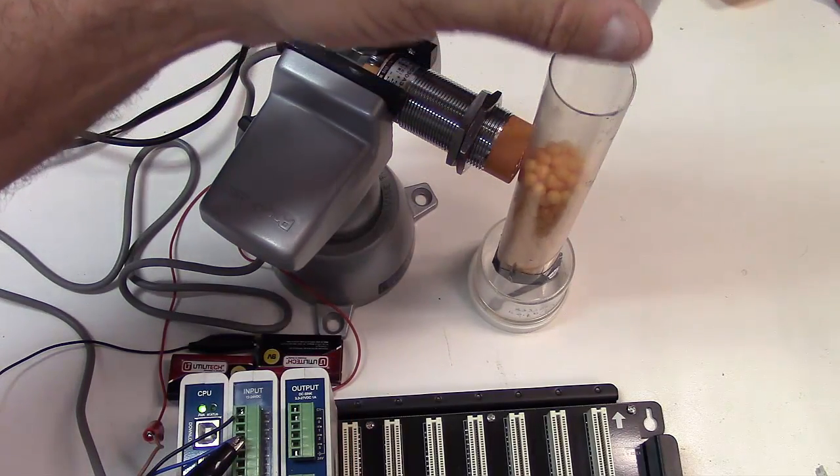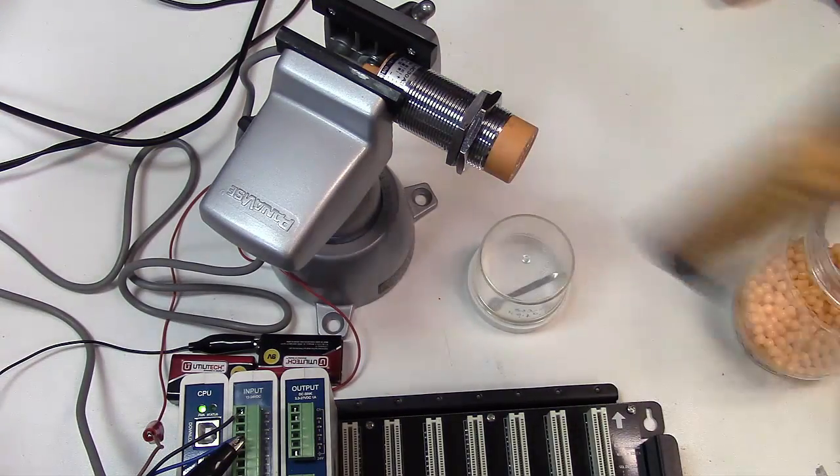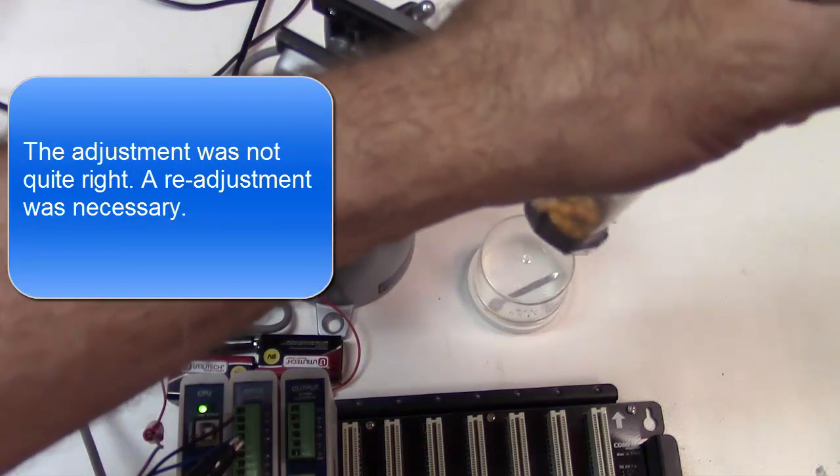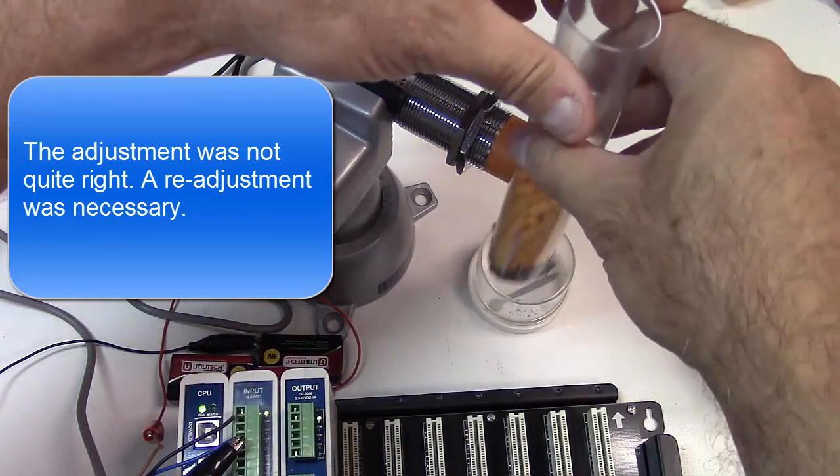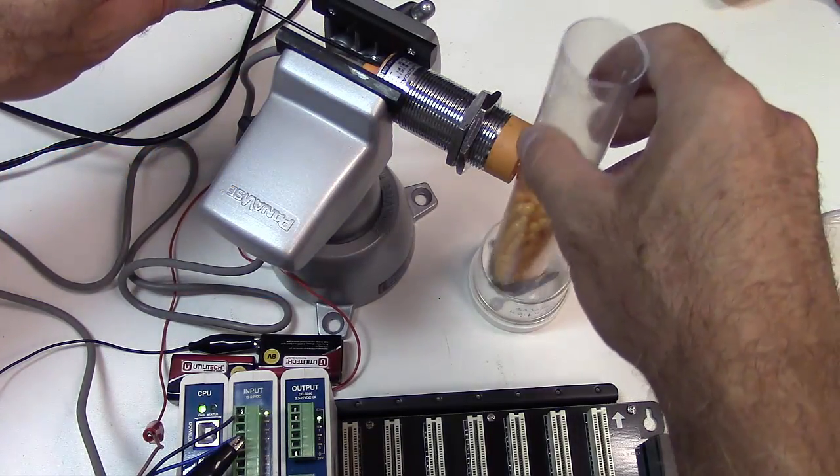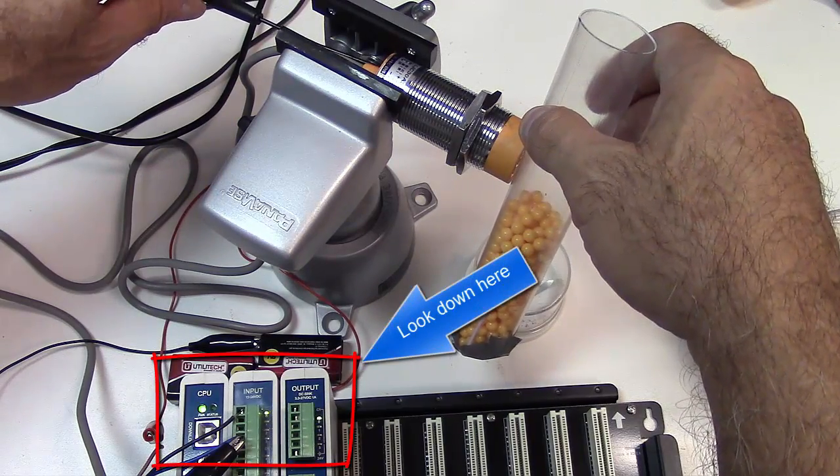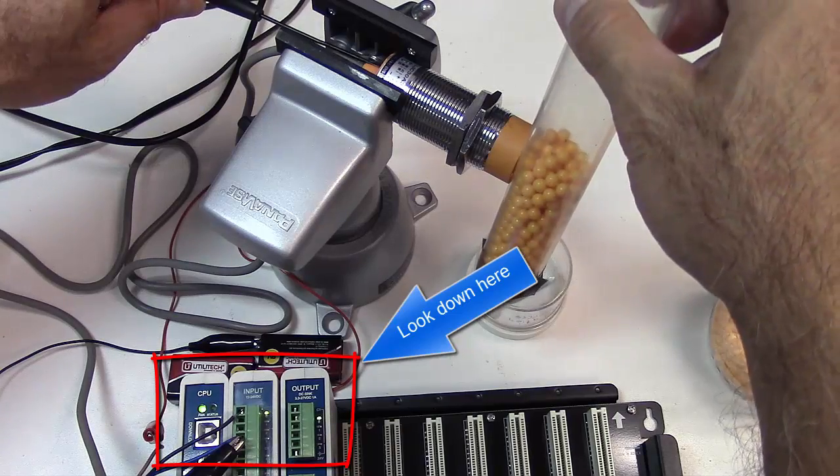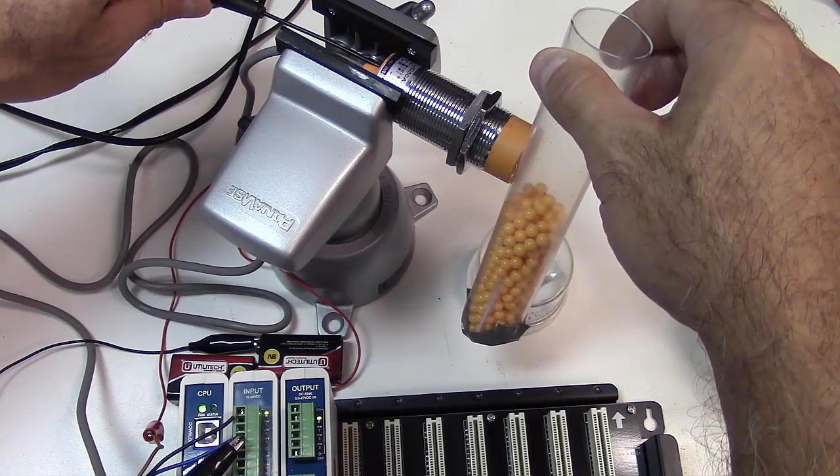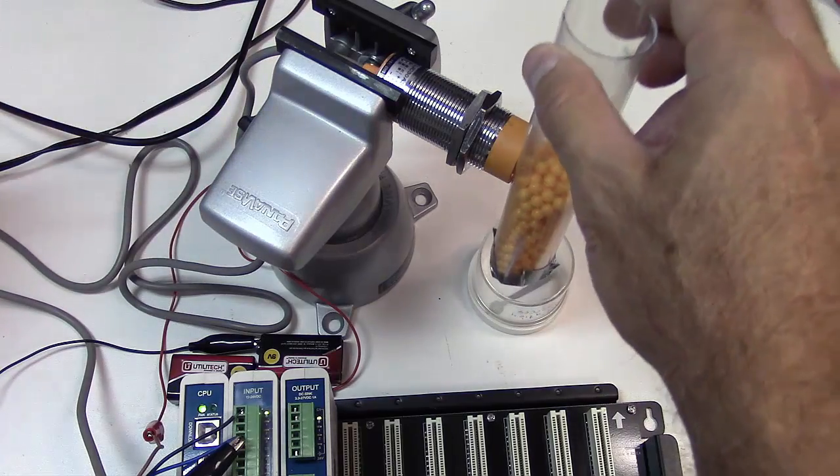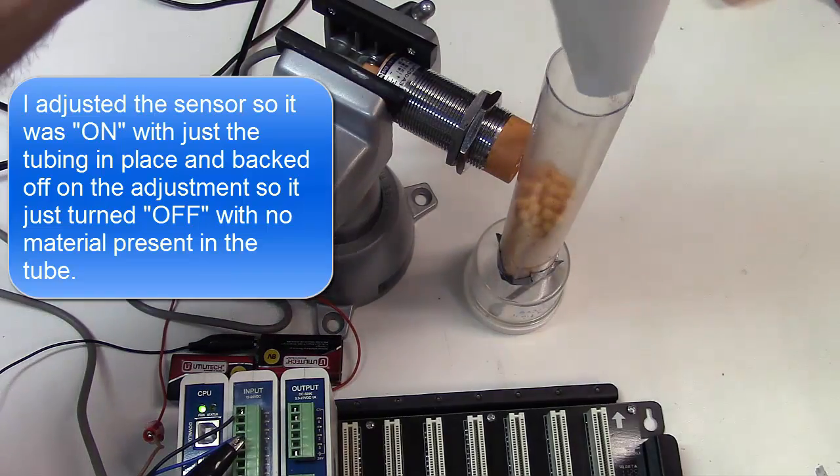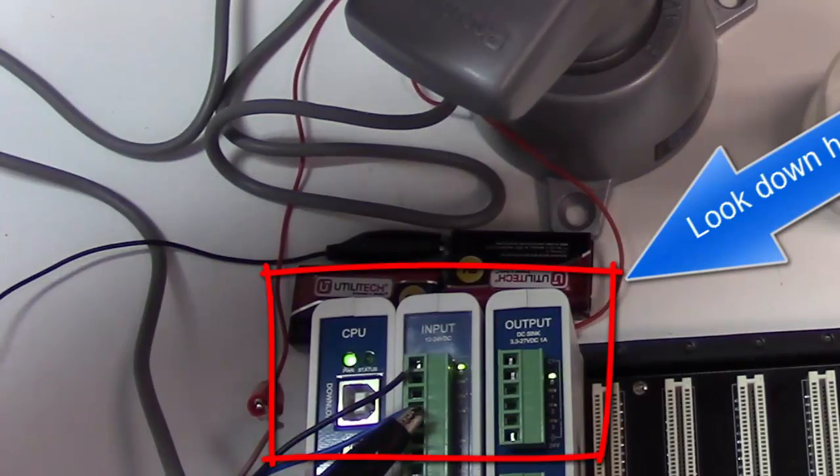Well it looks like I pulled it away while I was doing this so I'm going to try this again. I'm going to take the sensitivity up just a little bit more so it can respond. So I've got it adjusted so it's just off when there's no material inside there. So let's try this again. There we go, now we've got an activation.